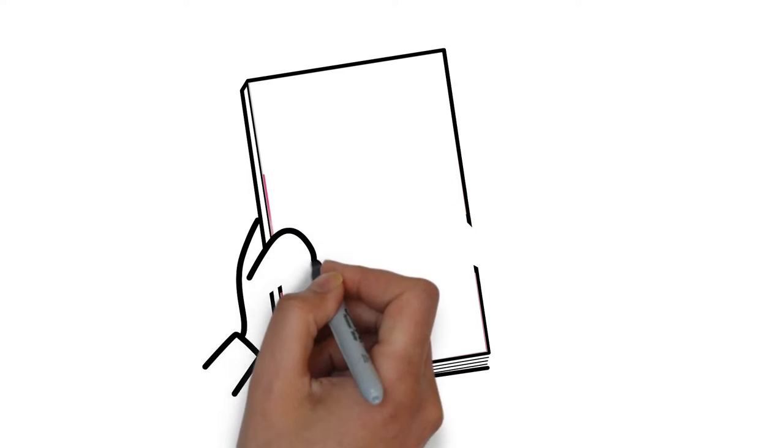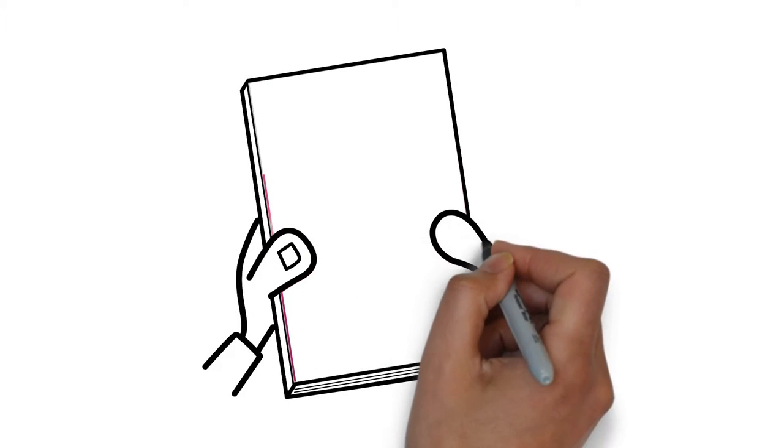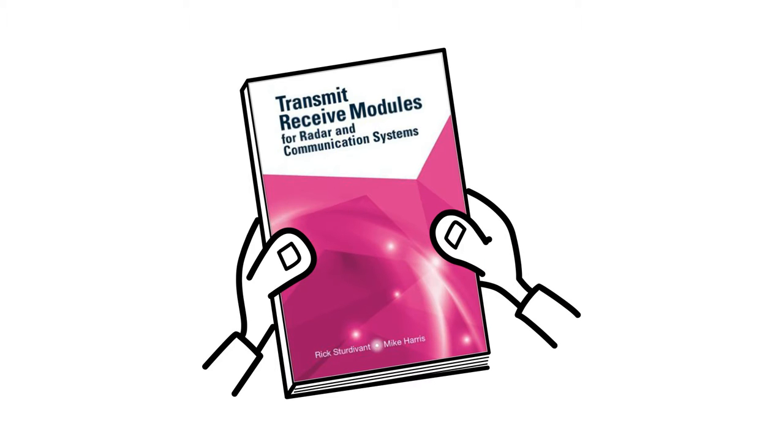Rick Sturtevant and Mike Harris are the authors of the new book, Transmit Receive Modules for Radar and Communication Systems.